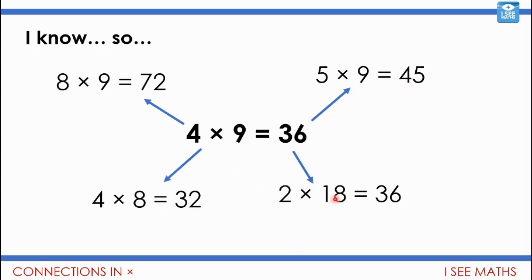Four nines equals 36, well what about, what's the link to two times 18? Well half of four is two, double nine is 18, so I've halved one number, I've doubled the other one, the answer, well it's the same. And what about this one? Four times nine equals 36, four times eight, well it's still lots of four, I just have one less lot of four now, so I've gone from 36 to 32.